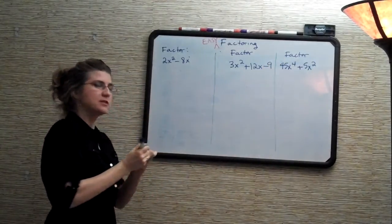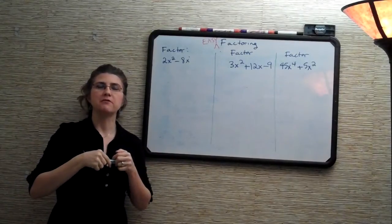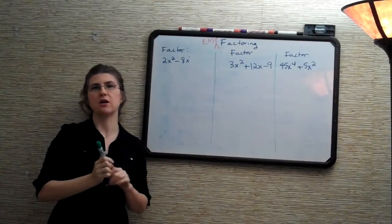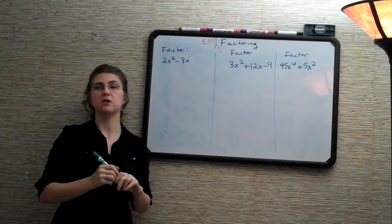In easy factoring, we are simply going to factor out the greatest common factor from any of the terms that are in the particular problem, so 2 or 3 or however many terms there are.